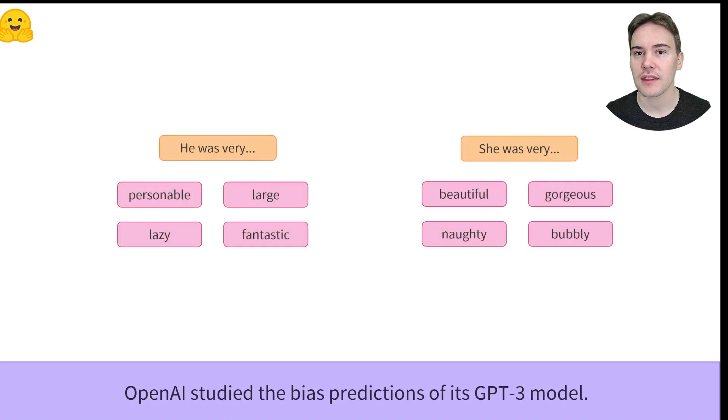OpenAI also studied the bias in the prediction of its GPT-3 model, which was pre-trained using the next word prediction objective. Changing the gender of the prompt from 'he was very' to 'she was very' changed the predictions from mostly neutral adjectives to almost only physical ones.